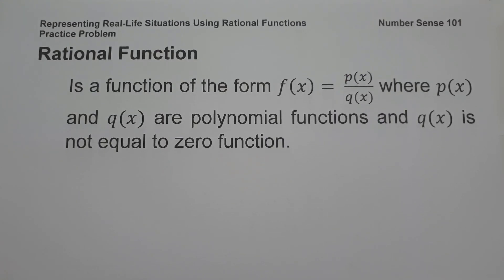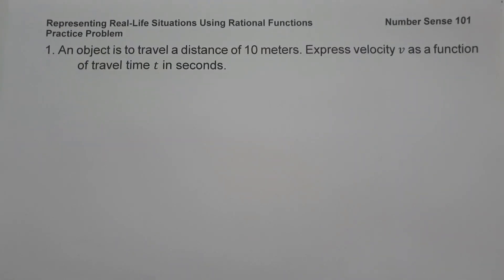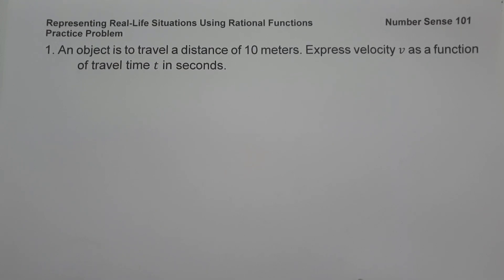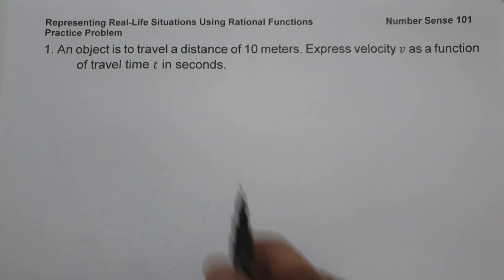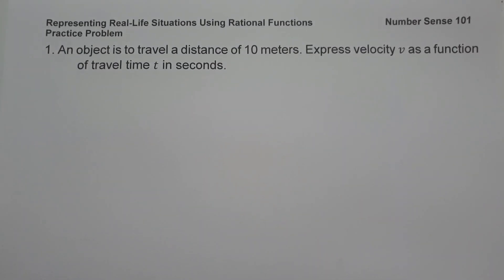Let's start with the first example. An object is to travel a distance of 10 meters. Express velocity, that is v, as a function of travel time, that is t, in seconds. To answer this question, let us use the formula for distance, speed, and time.